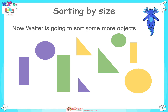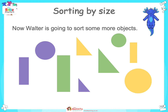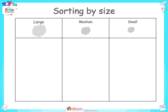Now Walter is going to sort some more objects. Do you think the groups will look different this time? Tell a talk partner what you think. He's going to sort them by size this time. The groups are large, medium and small. Because Walter isn't sorting by colours this time, colours don't matter.